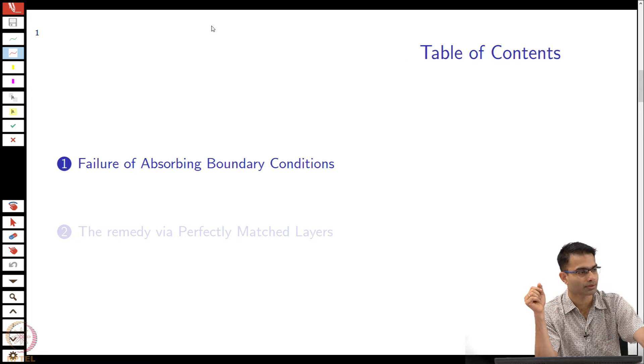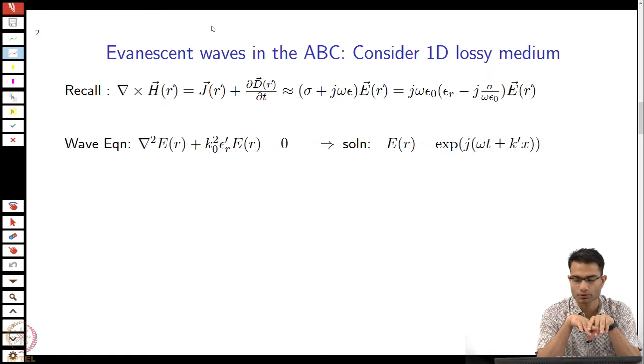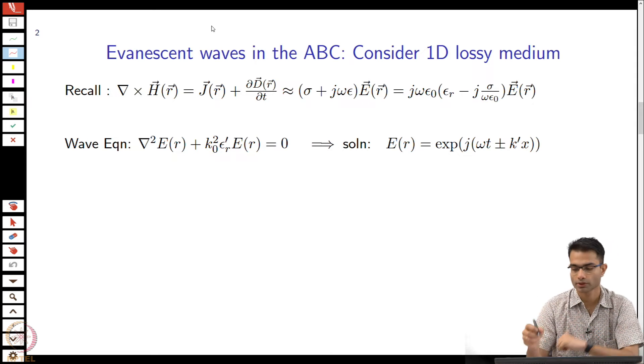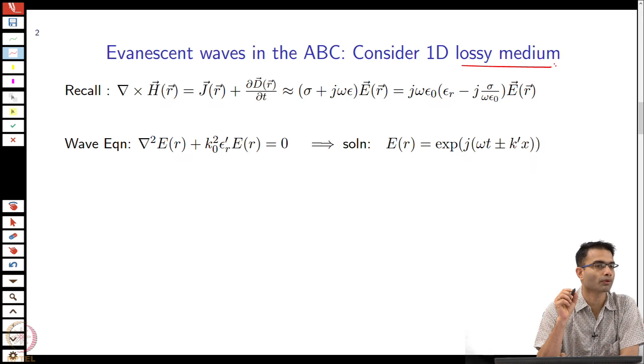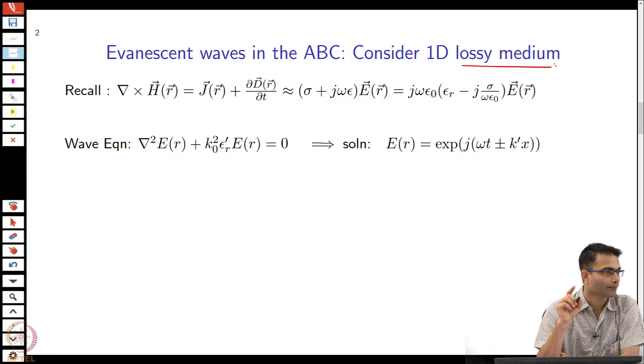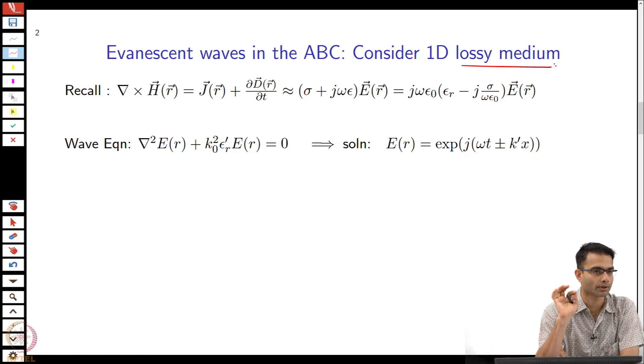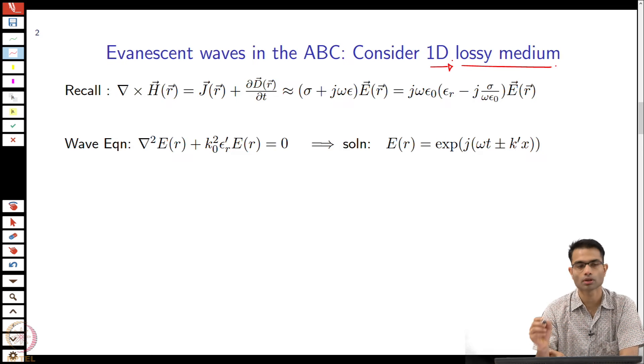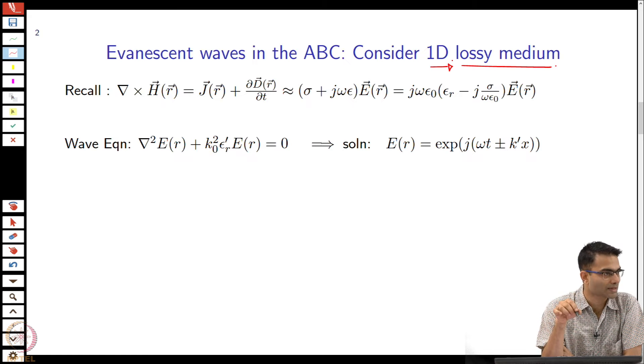The failure of absorbing boundary conditions is what we start with. Let us jump into this discussion by starting by considering a lossy medium. Previously when we had looked at absorbing boundary condition, what did we start with? 1D vacuum. In 1D vacuum we impose the boundary condition and we found that absorbing boundary condition was perfect, there was no reflection whatsoever. So we will keep the discussion limited to 1D, but now change it to a lossy medium.